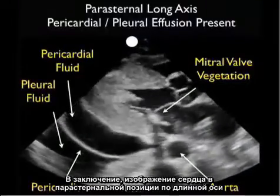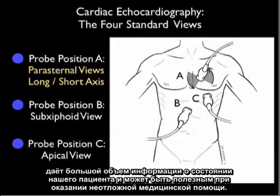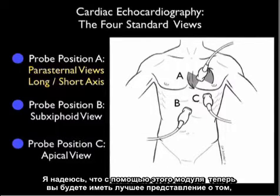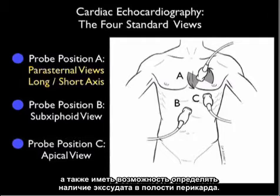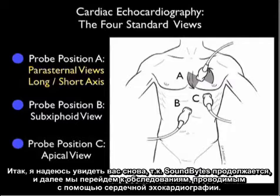In conclusion, the parasternal long axis view of the heart gives a great deal of information about our patient's condition and can be instrumental in emergency care. Through this module, I hope you'll now have a better idea on how to grade left ventricular contractility as good through poor, and also to be able to identify the presence of a pericardial effusion. I hope to see you back as SoundBytes continues and we look further at the cardiac echocardiography examinations.